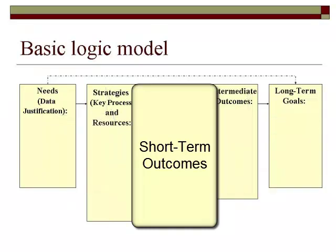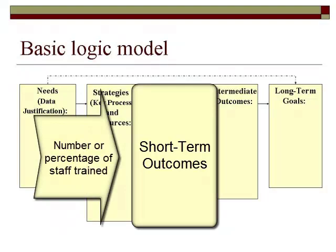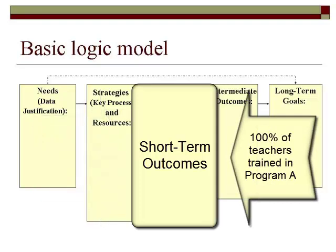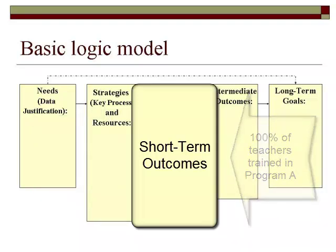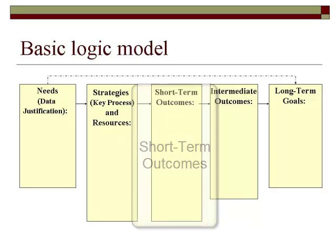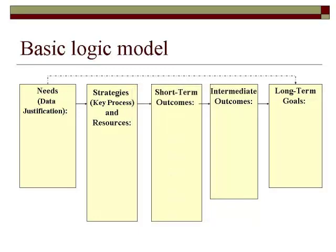For example, if your initiative requires training, you will want to set a short-term outcome associated with the number or percentage of individuals you would like to see trained — i.e., 100% of teachers trained in Program A. Remember to include process checks along the way, either as short-term or intermediate outcomes, and establish your expected timelines for each outcome.